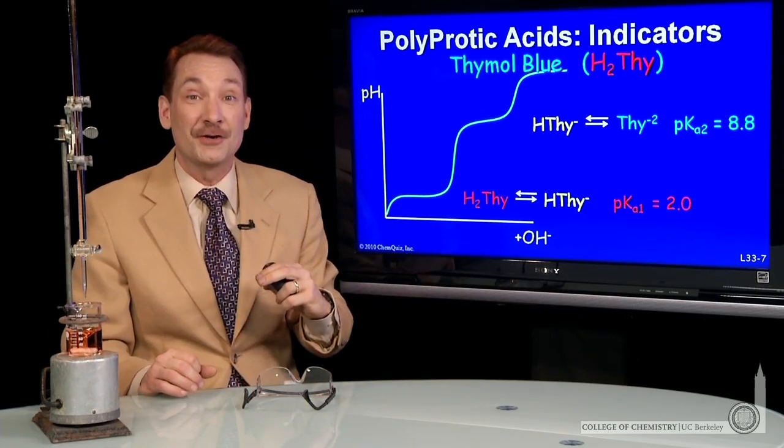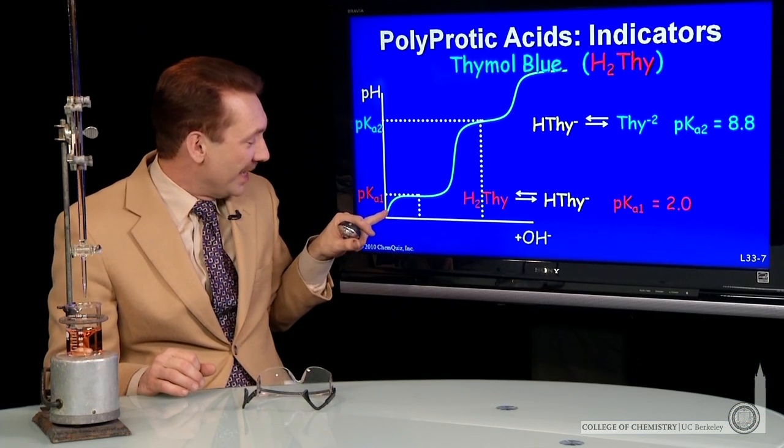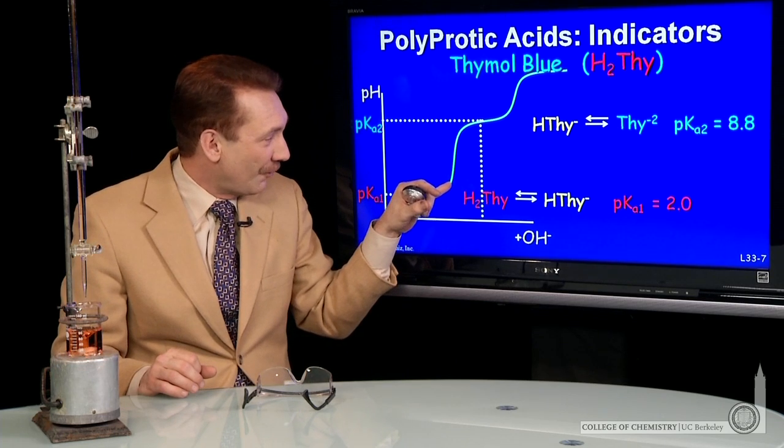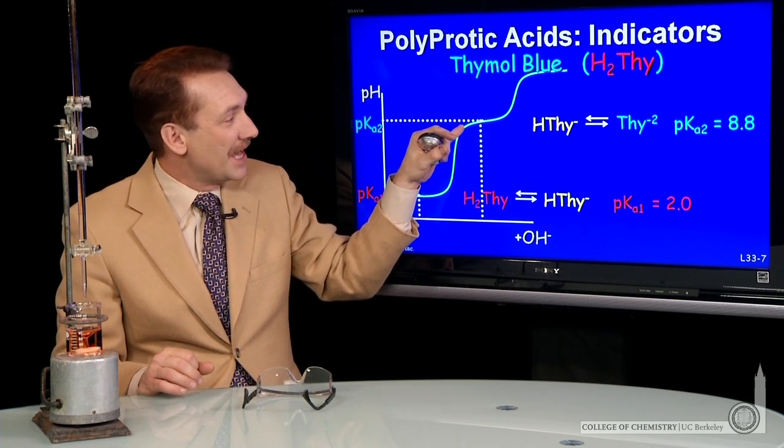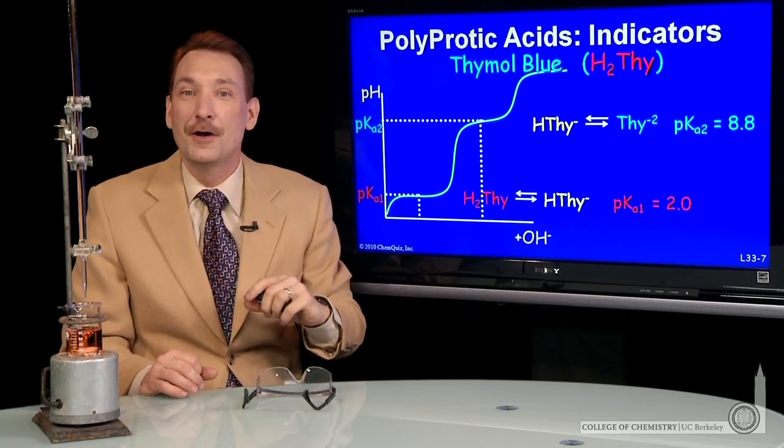So you could sketch out the titration curve and note the first buffer region for this indicator is around pH 2. The second buffer region is around pH 8.8. So a red form until you're around pH 2, then a yellow form between pH 2 and around pH 8, and then above pH 8, the blue form.